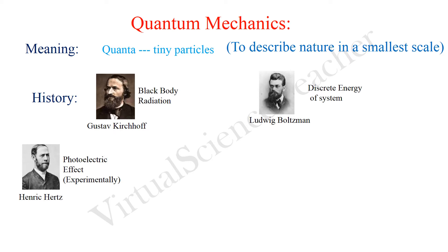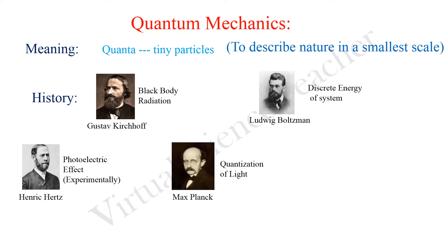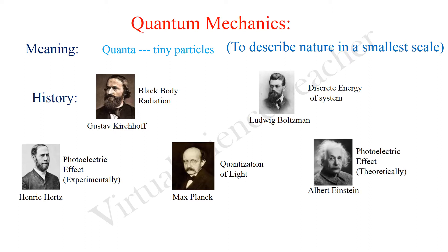At that time, classical theory assumed light to be of wave nature. Finally, Planck in 1900 discovered that light is made of individual quantum particles. Einstein then explained theoretically the photoelectric effect by considering light as a particle. Later, the name 'photon' was introduced by Gilbert Lewis.